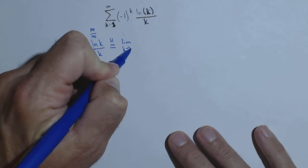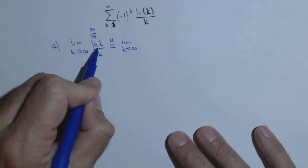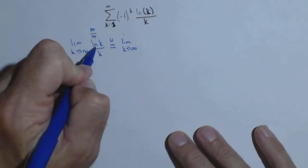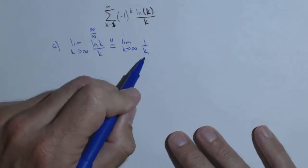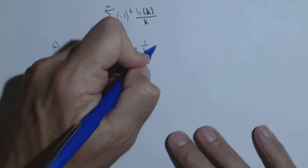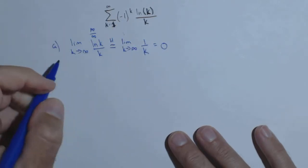we're going to take the derivative and recalculate the limit. Well, the derivative of ln of k is one over k. Derivative of k is just one, so one over k over one, I'm just going to leave as one over k, which equals zero.